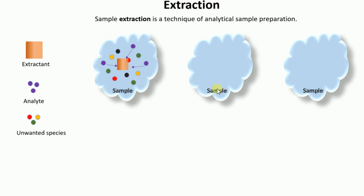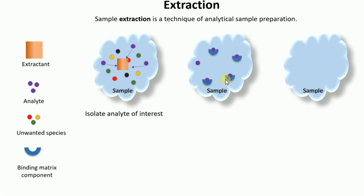In the second example, say you have a sample with some species that bind with your analyte of interest. Here the extractant will help you extract enough analyte so that you can analyze it with your detector. In the last example, if your sample has a very low concentration, you may want to concentrate the analyte in a suitable extractant.